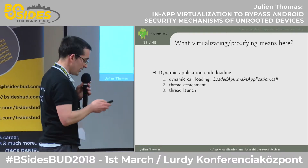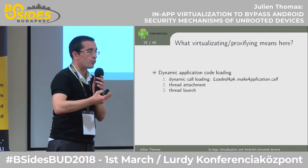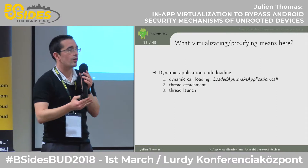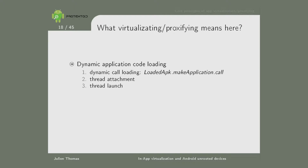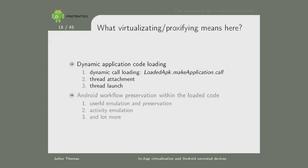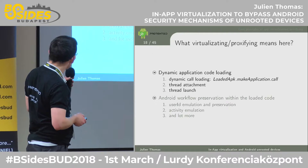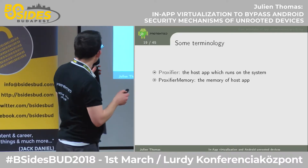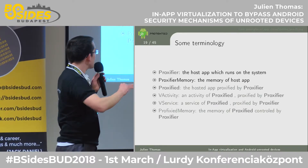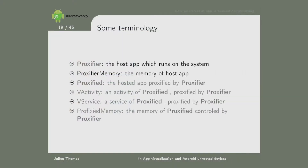If you want to really virtualize an application, you want to start a new application that the user sees as a new application — not as a feature or a button click. The application should behave as if it was normally launched. You want to launch it, do thread attachment, launch threads, and preserve the full Android workflow. When you launch the application, it creates a new process, spawns threads, new services, new processes for services, has user IDs and libraries. The proxifier is the host app doing the proxification, and the proxified is the hosted app. Key concepts are virtual activity and virtual service — normal activities and services launched under the control of the proxifier.